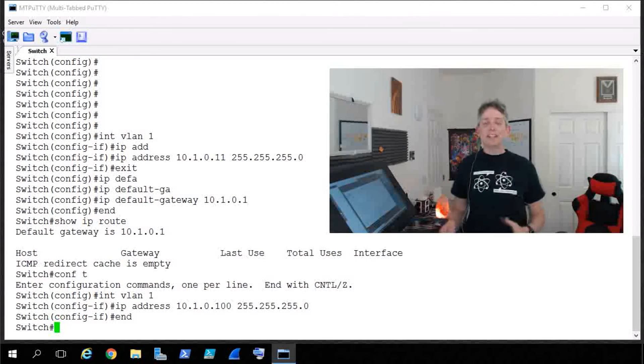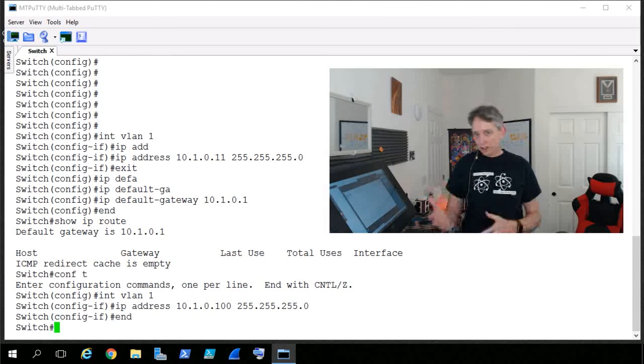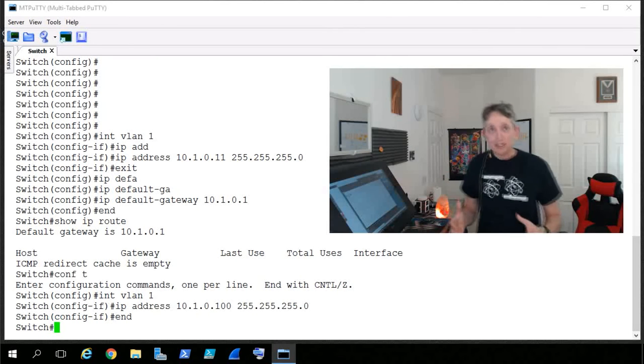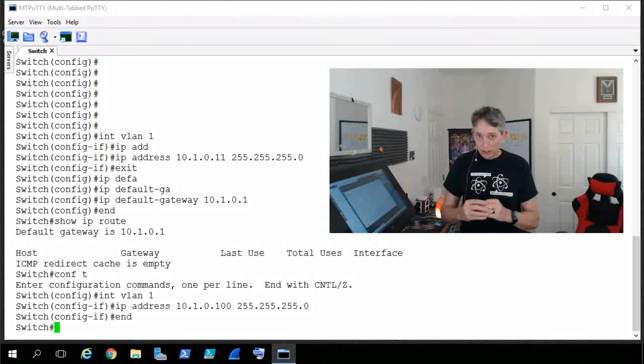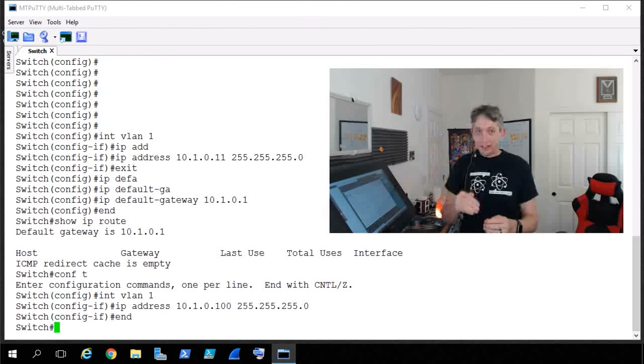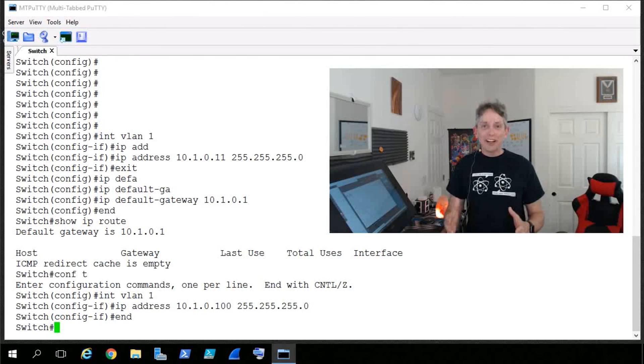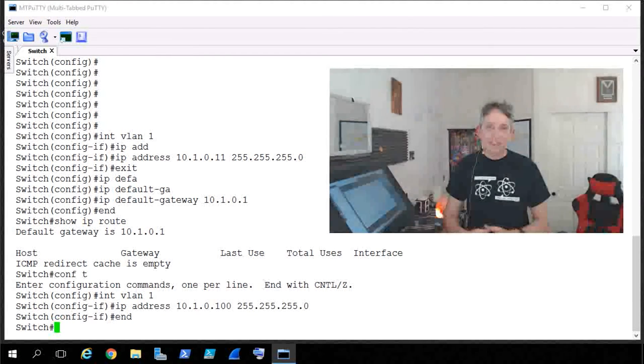In this nugget, we identified that a managed switch has features and functions that we can configure and tune. But if we can't access the switch to do it, it's a problem. So we set up a logical IP address on the switch that we can then use for remotely connecting to that switch for management purposes. I hope this has been informative for you. And I'd like to thank you for viewing.